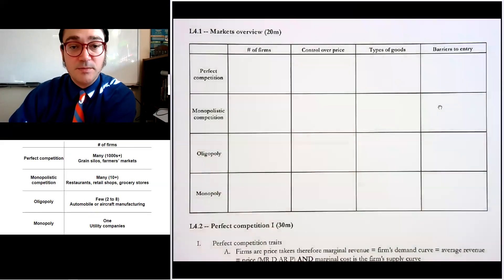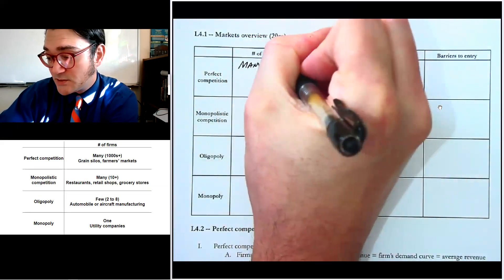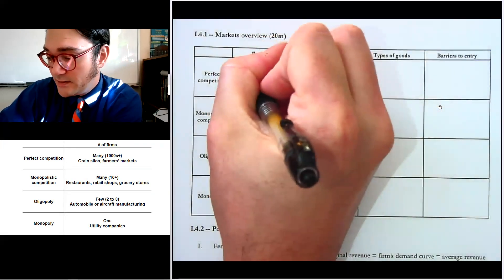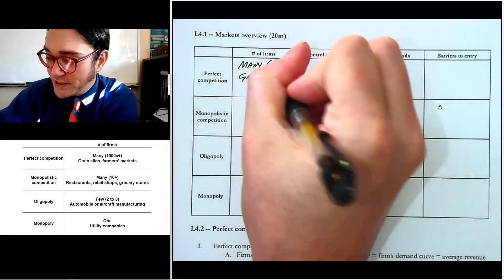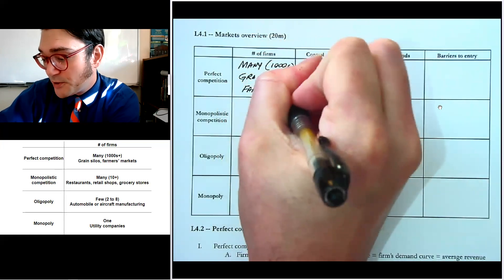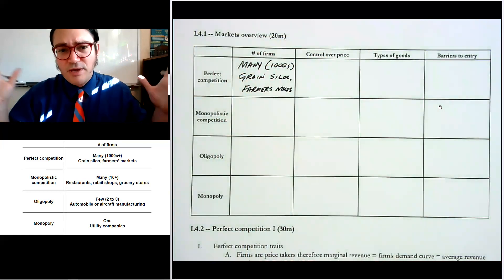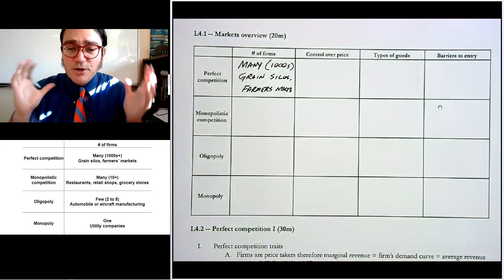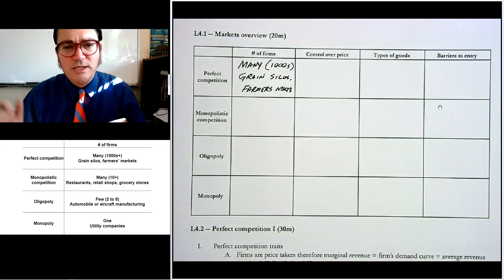The first thing to know about perfect competition is that there are many firms — we can say thousands within a market area. Examples include grain sold in silos out in the countryside. Farmers markets are often given as the common example of a perfectly competitive market, but they're not great because there aren't usually hundreds and hundreds of sellers — maybe around 50. Grain markets are ones that actually approximate it fairly well.